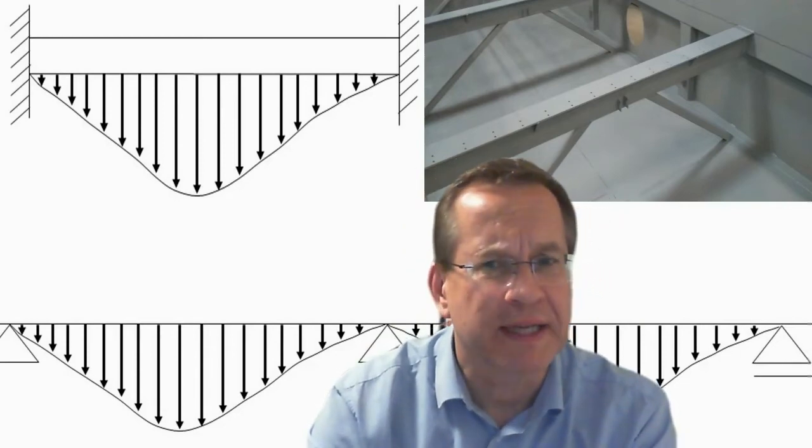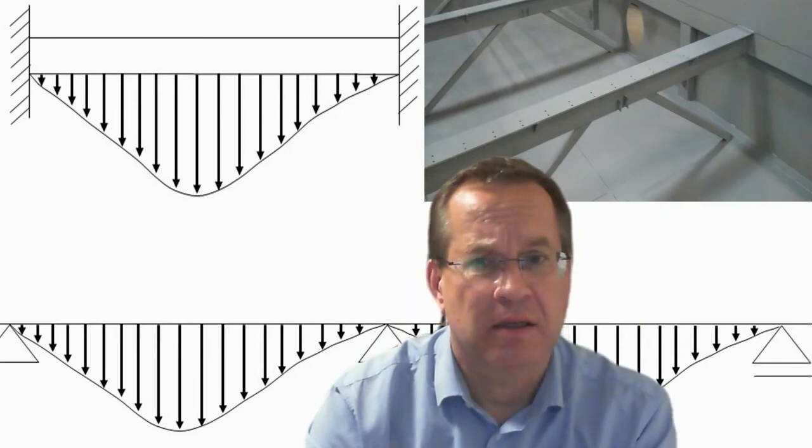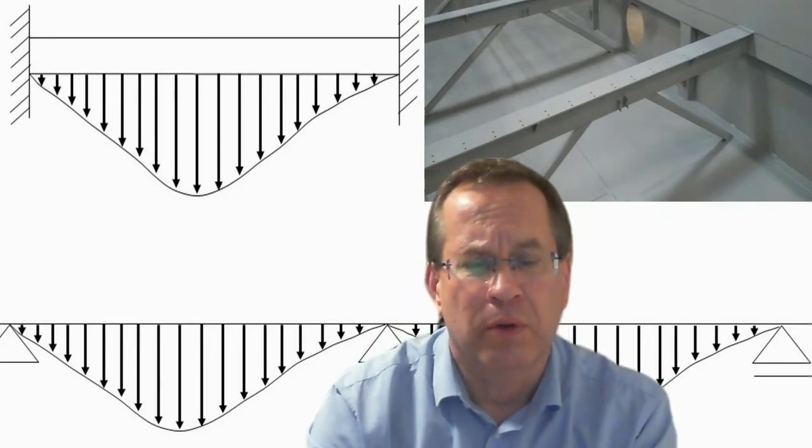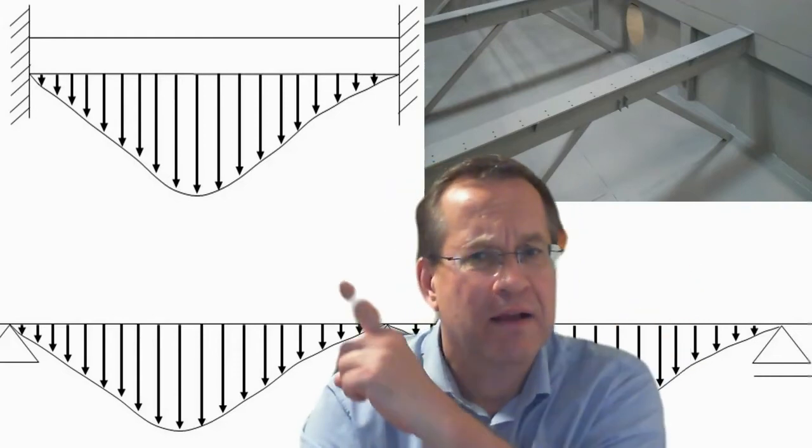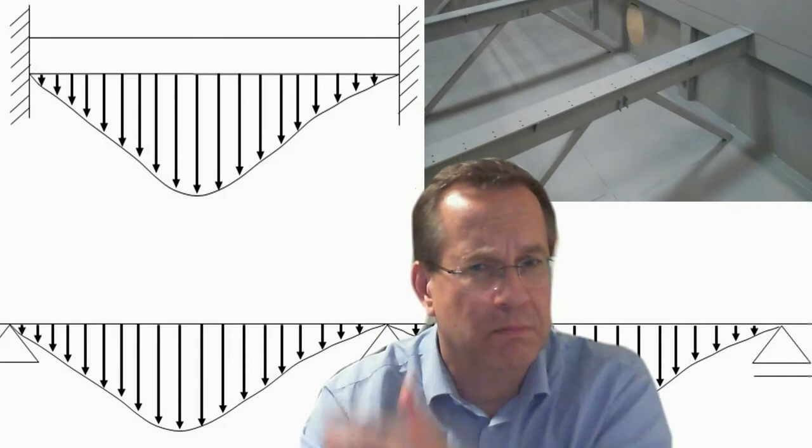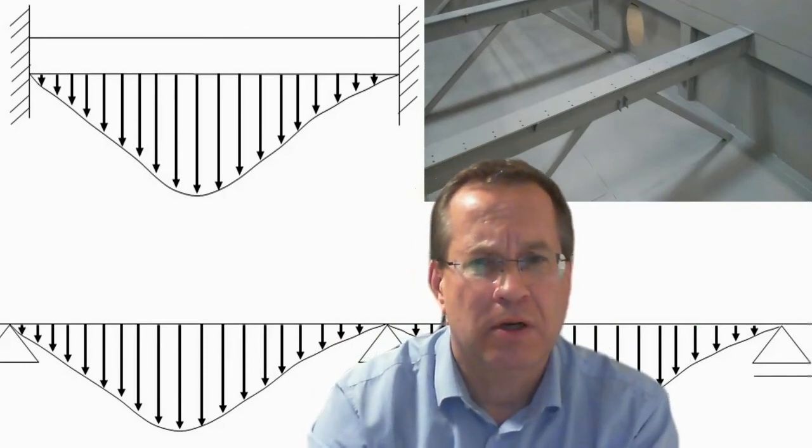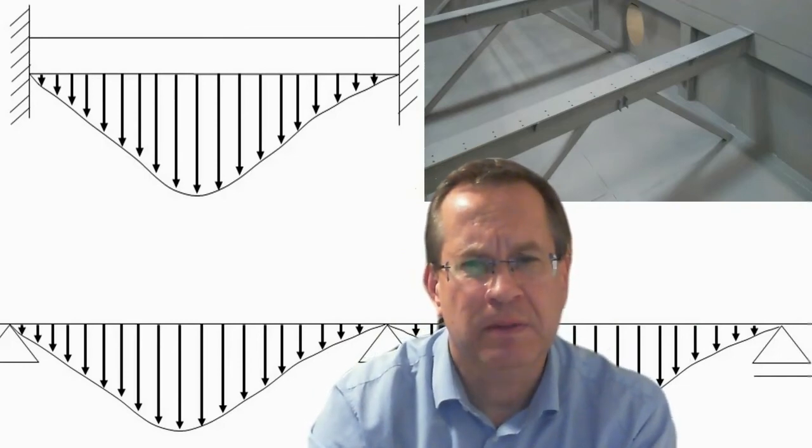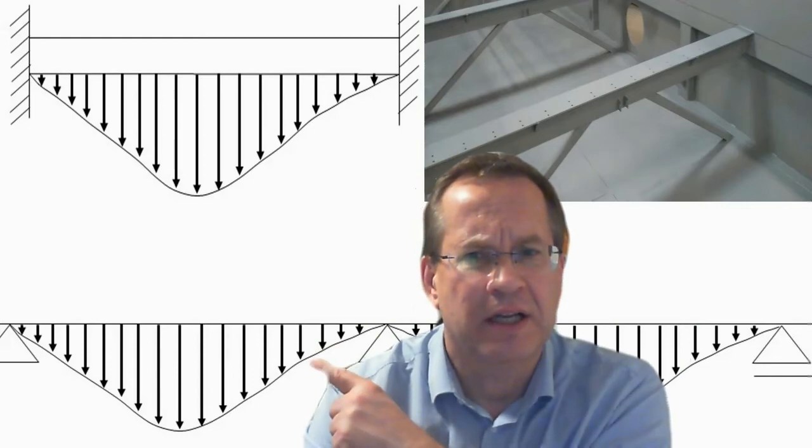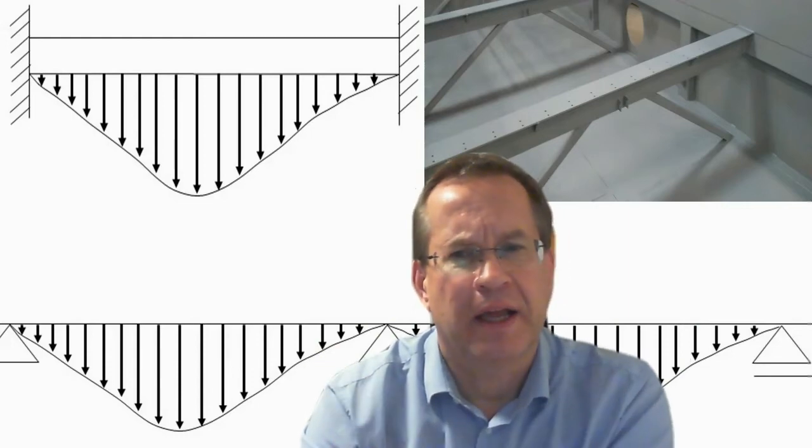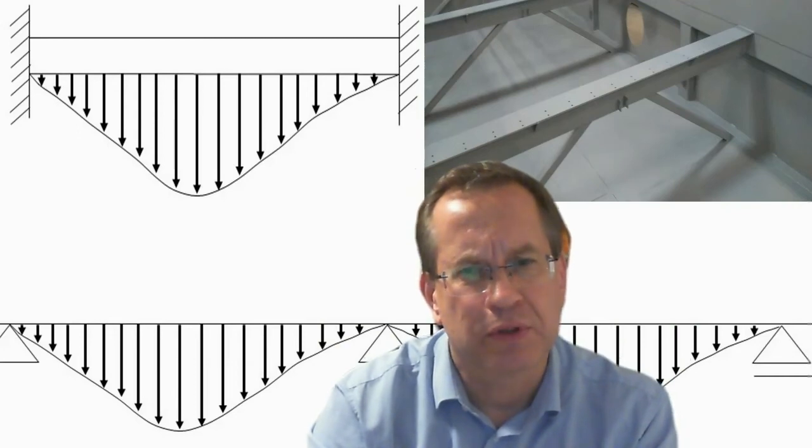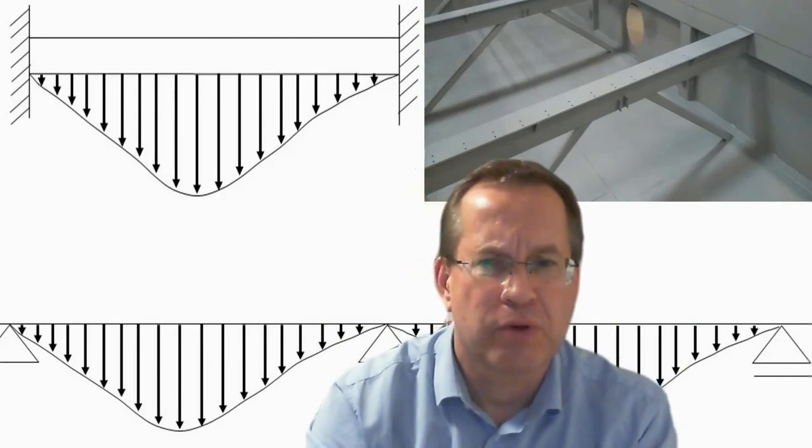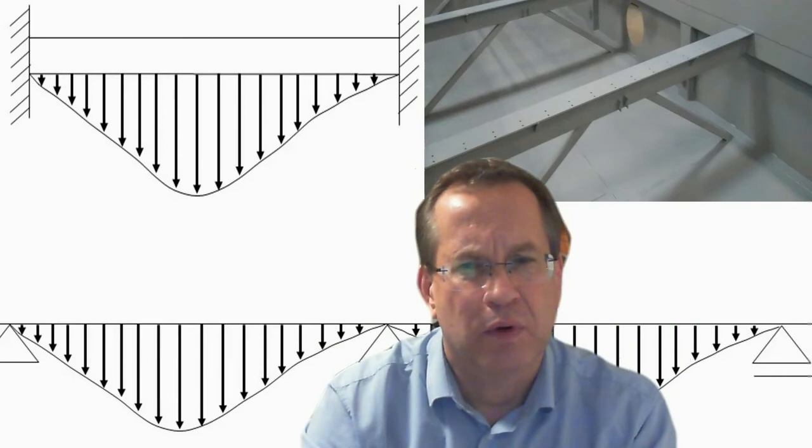This weight creates mechanical loads on the support beams and we have such a load scheme for such a cross member. It creates also a mechanical load on the slats that are put onto the cross members gliding forward and backwards.